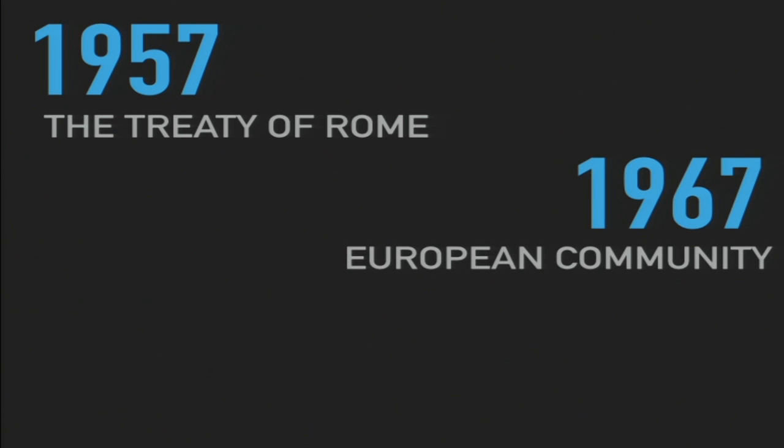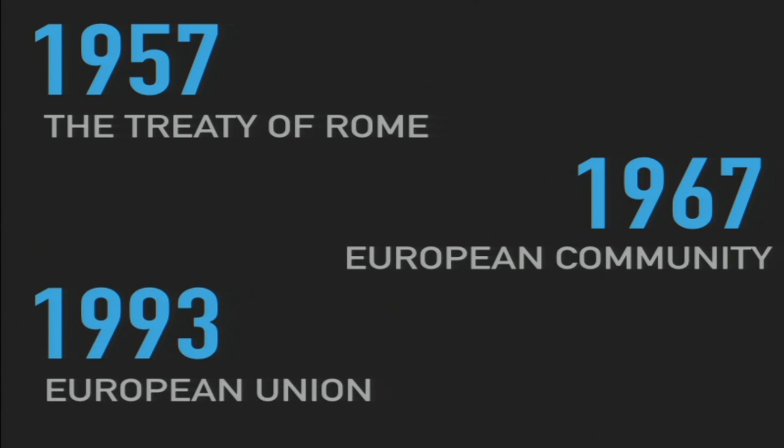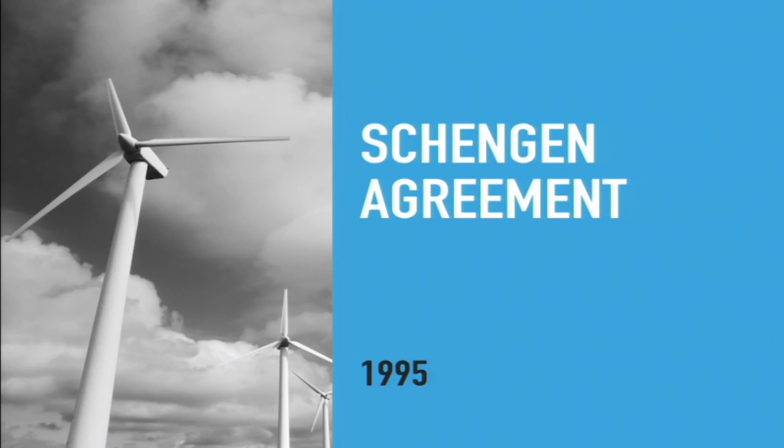Ten years after, we had the European Community. And only in 1993 we got what we have now — the European Union. Two years after that, the Schengen Agreement started to take effect. The consequence of all of these things is that for European citizens, traveling across borders is free. We don't have passport control when we go between Austria and Germany, or between Italy and Austria. We travel freely across borders.